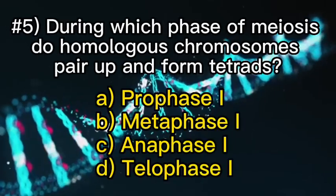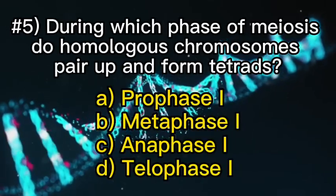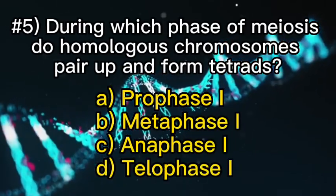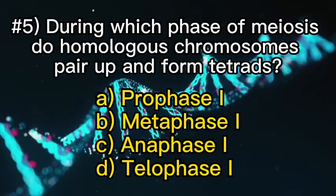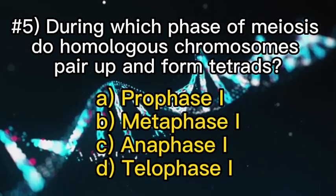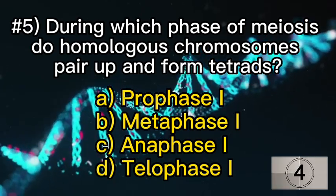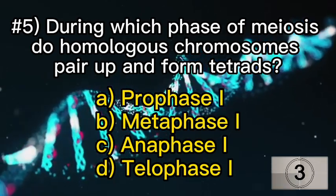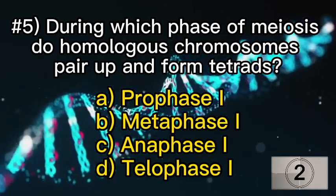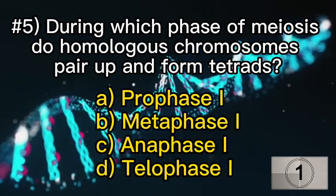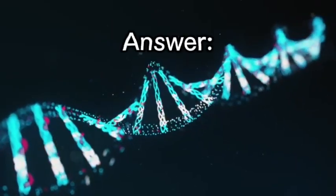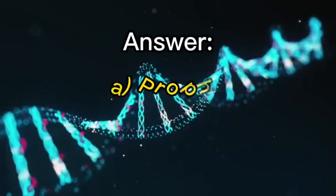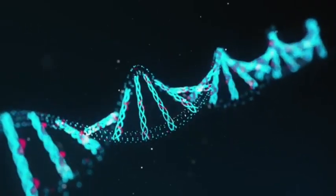Number five: during which phase of meiosis do homologous chromosomes pair up and form tetrads? A — prophase I.